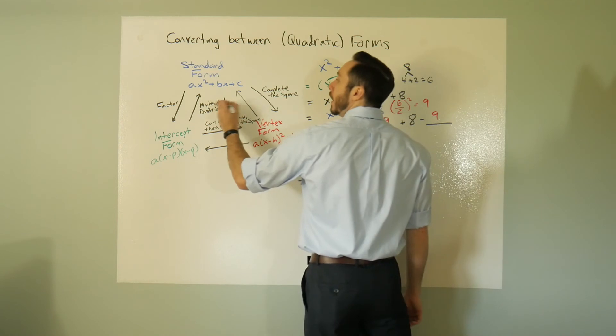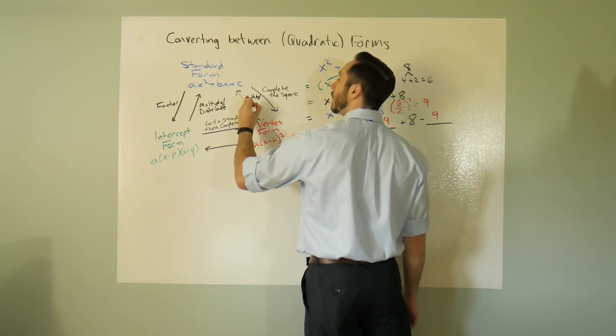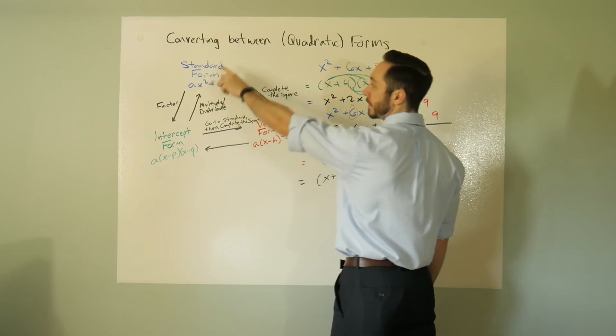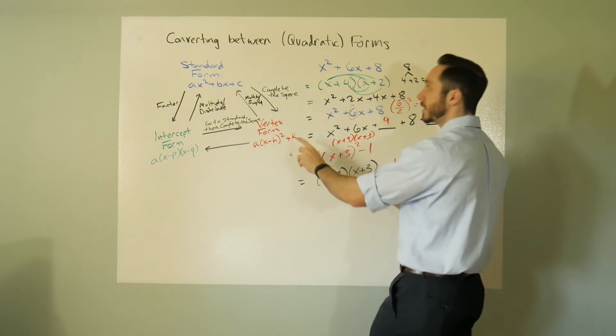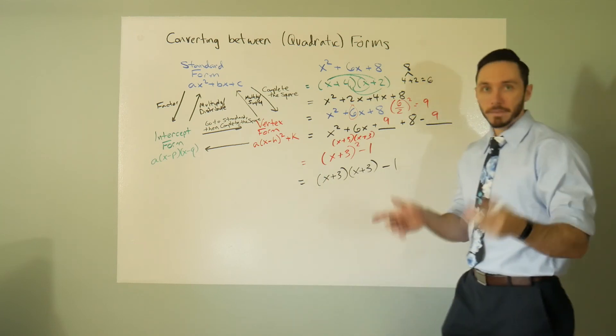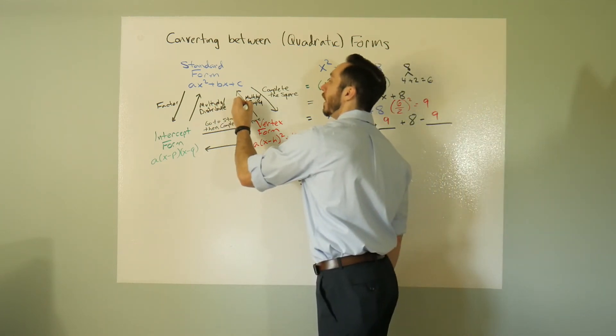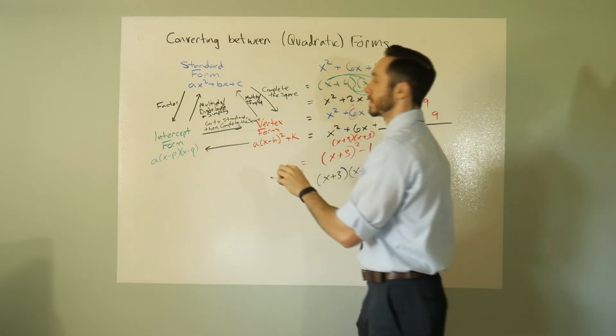I need to remultiply out and simplify. So going from vertex to standard, it'll be multiply and simplify. It's essentially the same exact thing as going from intercept to standard. I said multiply, just distribute it out. Same thing with vertex into standard, you're going to multiply it out and then simplify.